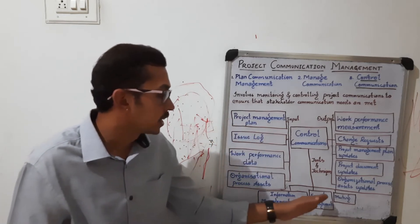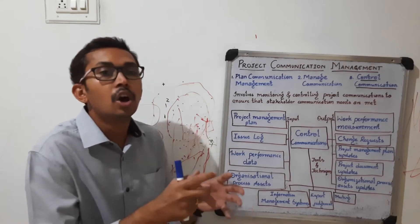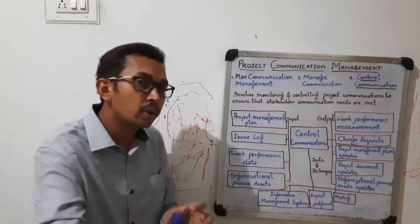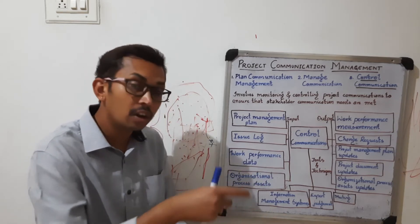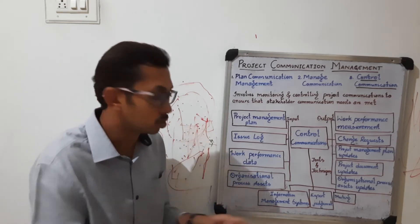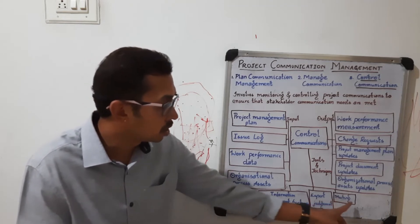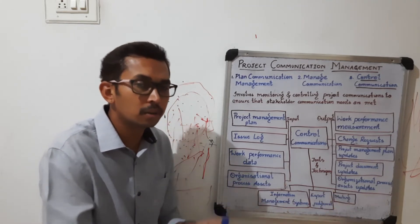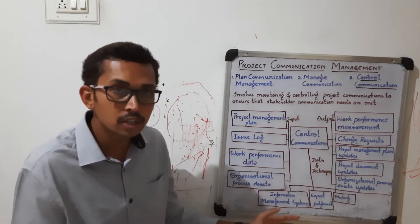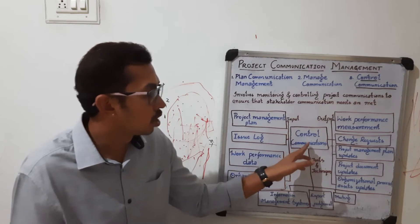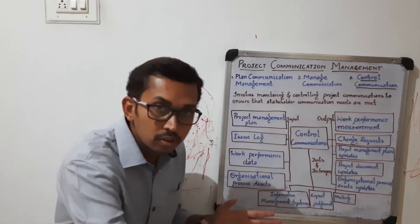Next is expert judgment — before taking any decisions, experts give their opinion from their particular knowledge domain, and then a decision is made on what to do. Meetings are also conducted with team members and stakeholders. These are the tools used for control communication.